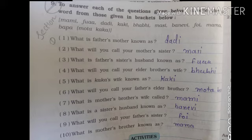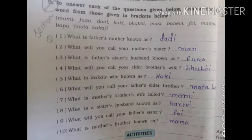4. What will you call your elder brother's wife? Babi. 5. What is Kaka's wife known as? Kaki. 6. What will you call your father's elder brother? Mota Bapa.